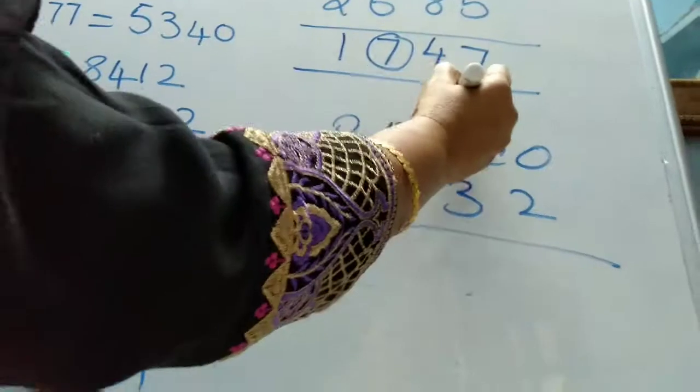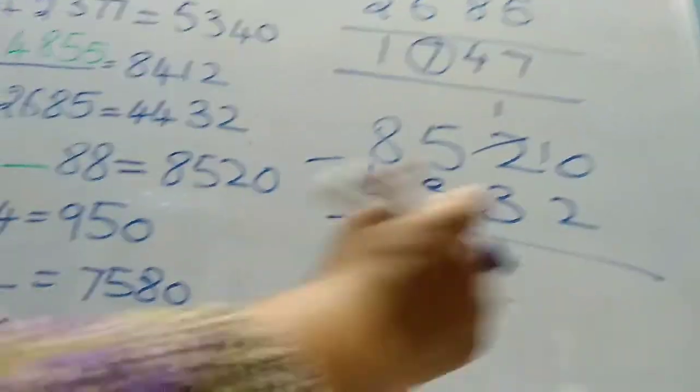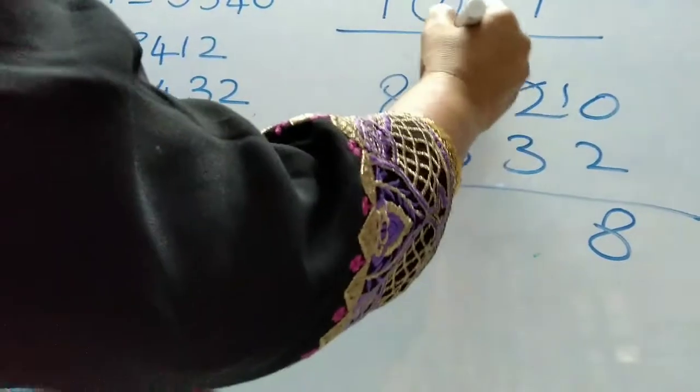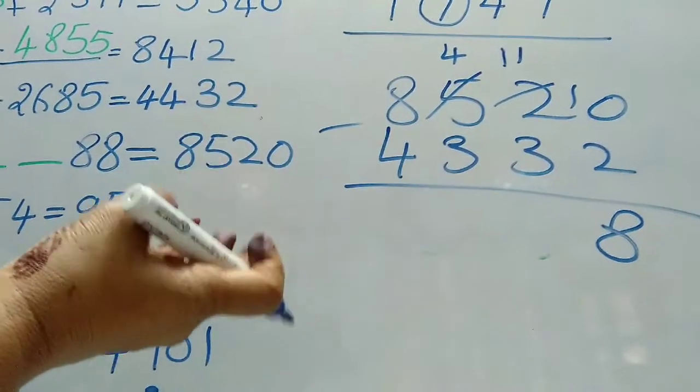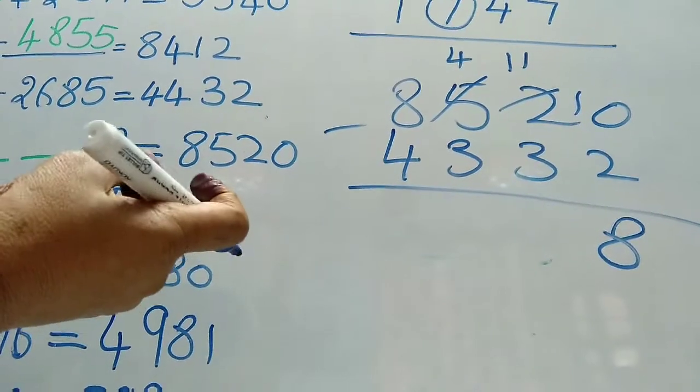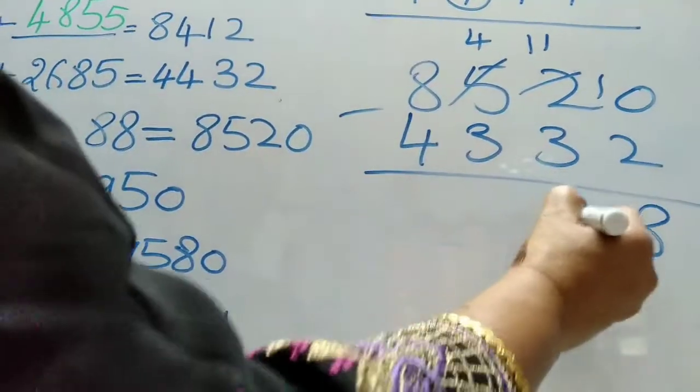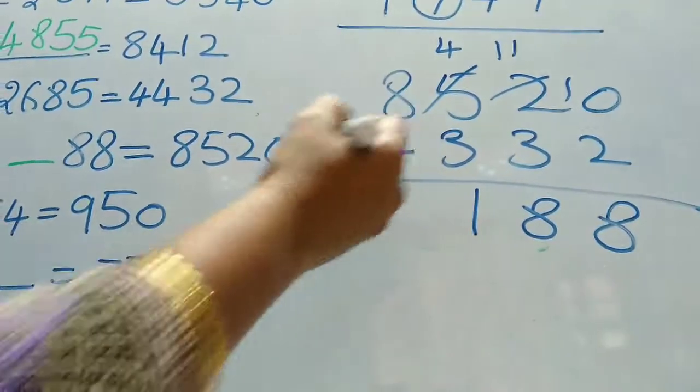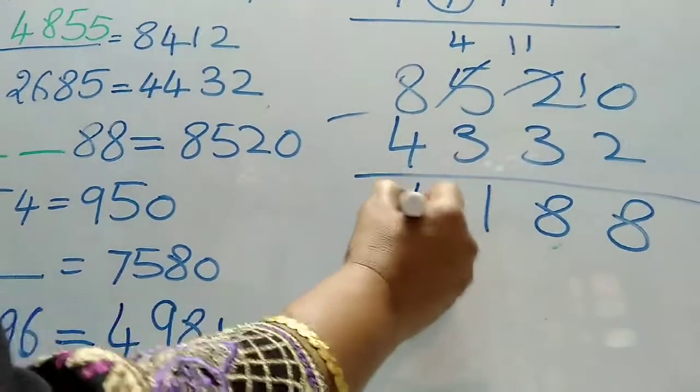Borrow 1, that's 10. From 10, 2 goes 8. Borrow 1, that's 11. From 11, 3 goes, count to 11, that's 8. From 4, 3 goes 1. From 8, 4 goes 4.